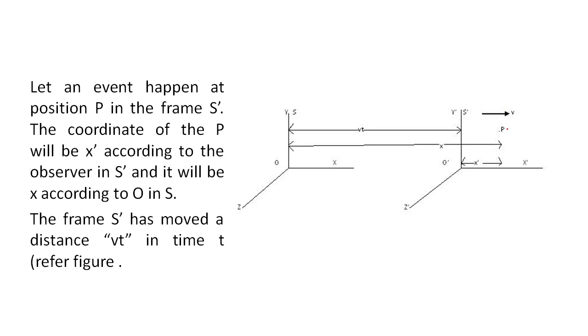Let an event happen at position P in the frame S dash. Any event can happen in the frame S dash. For example, a biker has a cap and he has thrown the cap. Here, the coordinate of the P will be x dash according to the observer O dash in frame S dash.